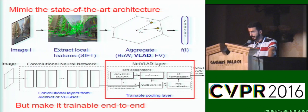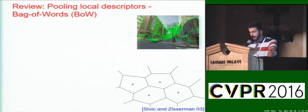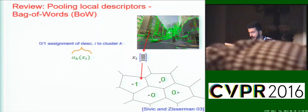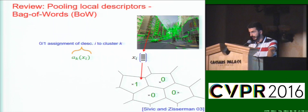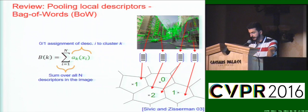We give a short review of pooling methods for local descriptors. A well-known method is Bag-of-Words, which starts by quantizing the descriptor space using k-means. A descriptor x is extracted and assigned to its closest cluster, denoted with the assignment variable a_k, which is 1 or 0 depending on whether cluster k is the closest cluster to descriptor x. All descriptors in the image are assigned to their closest clusters, assignment variables are summed up, counting the number of descriptors per cluster, and the counts are concatenated to form a Bag-of-Words histogram.